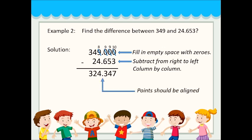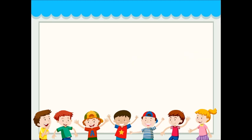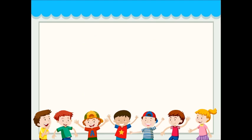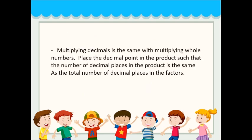The decimal point should be aligned, so that's our final answer. Next: multiplication of decimals. Multiplying decimals is the same as multiplying whole numbers. Place the decimal point in the product such that the number of decimal places in the product is the same as the total number of decimal places in the factors.